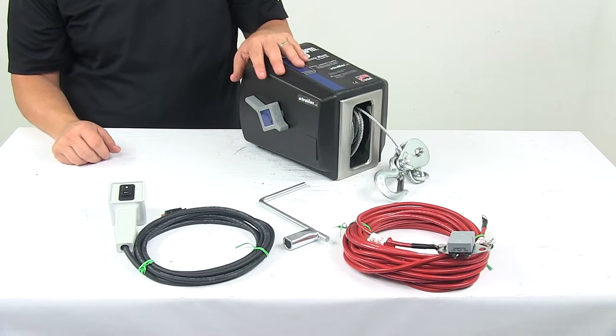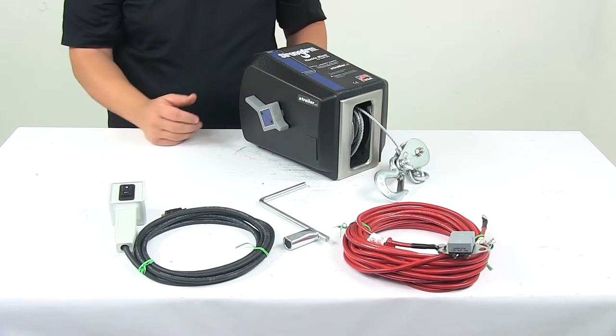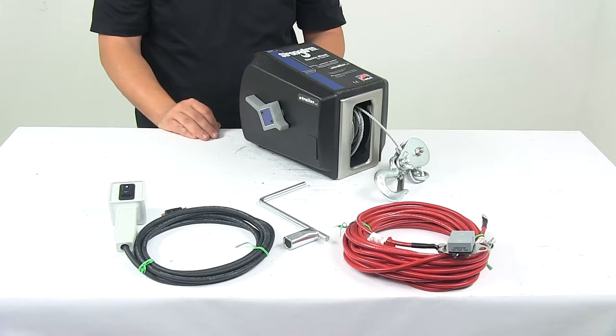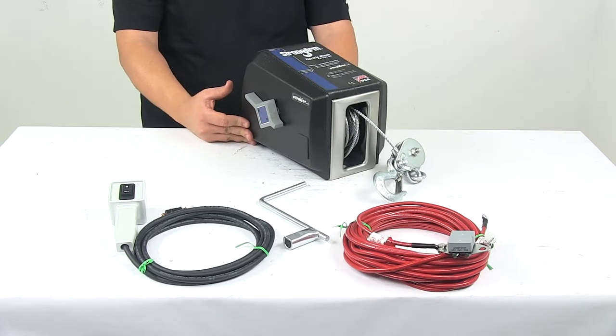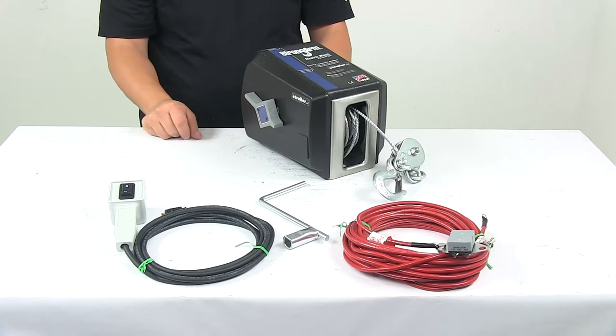The products made in the USA. When it comes to the load capacity, we're looking at about 1,500 pounds. Double line capacity is 2,200 pounds, and that rating is based on 10 foot of pull.